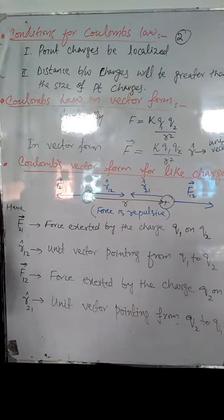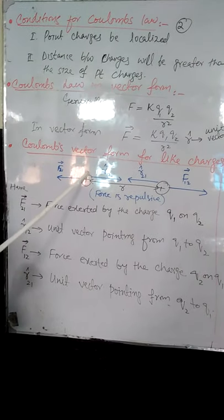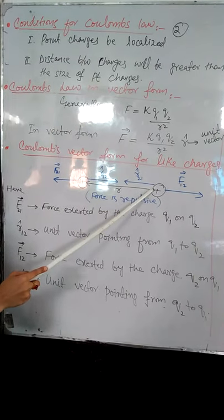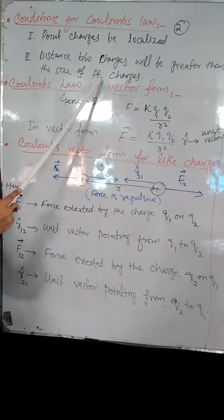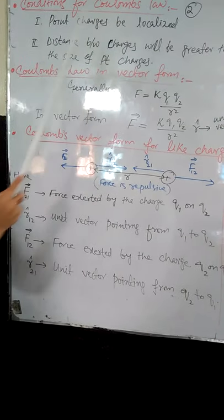These are two necessary conditions for Coulomb's law. Number one charges should be at rest. And their central distance should be greater than the size of the charges. Second thing, the next point is Coulomb's law in vector form.